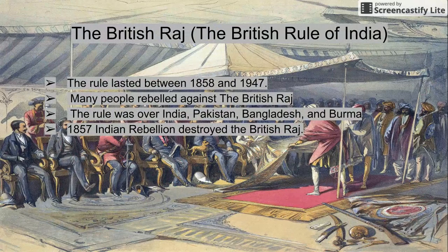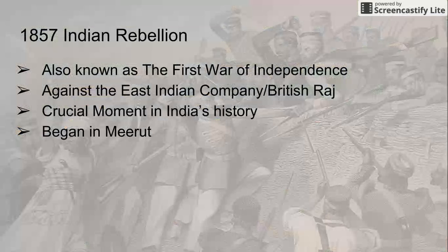The British Raj was the British rule of India. The rule lasted between 1858 and 1947. Many people rebelled against the British Raj. The rule was over India, Pakistan, Bangladesh, and Burma. In 1857, the Indian Rebellion destroyed the British Raj.